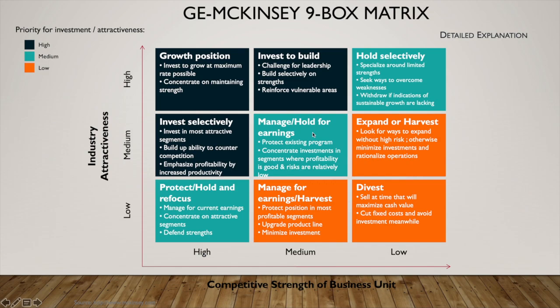A hold strategy occurs when a product has both average competitive advantage and market attractiveness. Here, businesses should invest in segments with high profitability and low risk, while also minimizing their weaknesses. If the product is at a competitive disadvantage and resides in an unattractive industry, a harvest strategy should be employed. Investments should be minimized at all costs, and assets should be sold when cash value is highest. The harvest strategy also ensures that low-viability products do not negatively impact other highly viable areas of a portfolio.